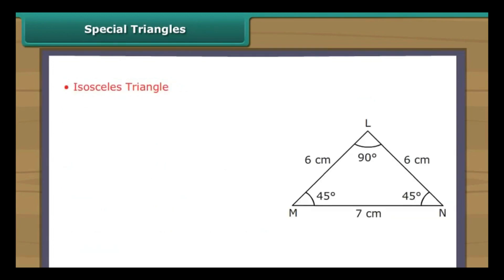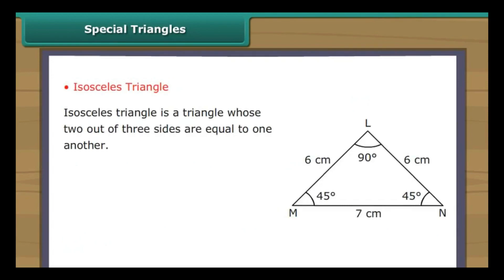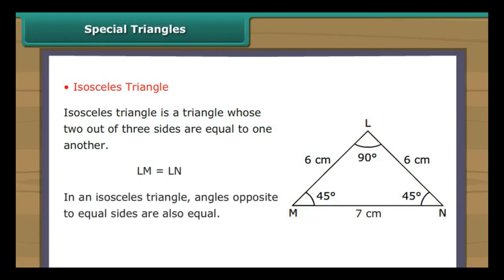An isosceles triangle is a triangle in which two out of three sides are equal. In triangle LMN, LM equals LN. In an isosceles triangle, the angles opposite to the equal sides are also equal. In triangle LMN, angle LMN equals angle LNM.